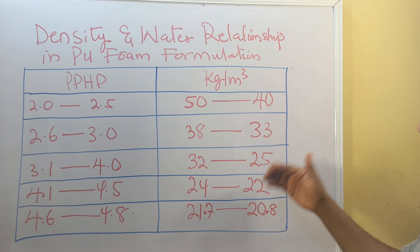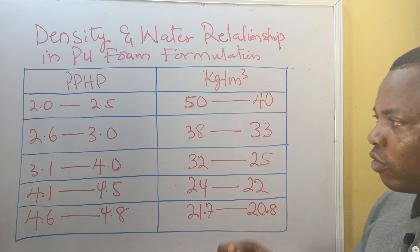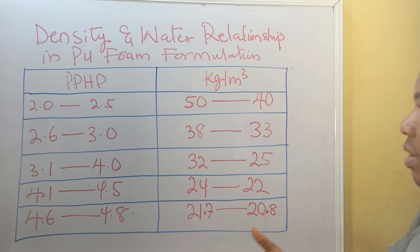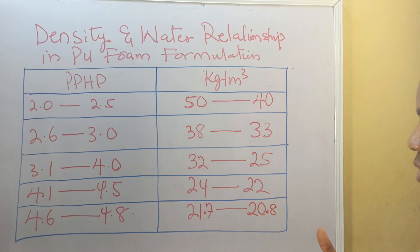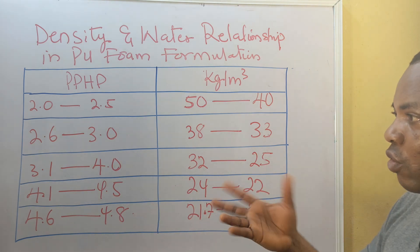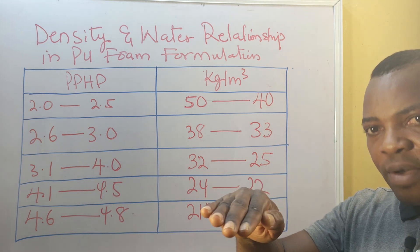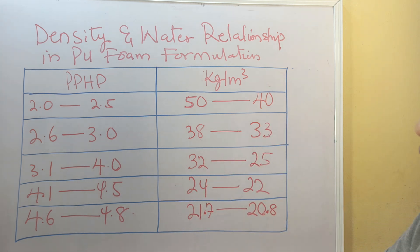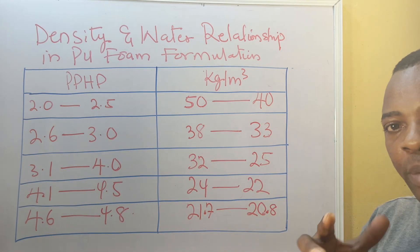By doing so, you need to carry out laboratory tests to check whether the targeted density matches the calculated density before going into a larger production process. Some of this data may need adjustment depending on the location of the factory, atmospheric weather, and the altitude of your factory location, which can also affect the behavior of the water. So adjustment needs to be made for your specific location.